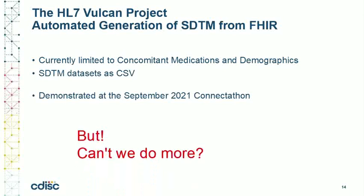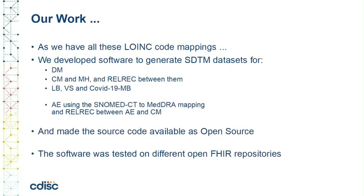We can already do much more, however. As we do have all these LOINC mappings, we can use them to also automatically generate SDTM datasets for other domains, especially findings domains. So we developed software to automatically generate SDTM datasets for DM, for CM and MH, and describe the relations between them in a RELREC dataset, and for the findings domains LB, VS, and COVID-19 MB. We recently could also add AE using the SNOMED-MedDRA mapping, and also add additional records to RELREC for describing the relations between AE and CM. The software is written in Java and is available as open source. I will provide the link at the end of the presentation. We are testing using publicly available FHIR repositories such as HappyFHIR and Cynthia.